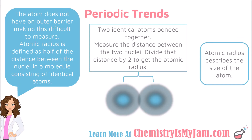The third trend is atomic radius — basically the size of the atom. One thing to note is that the atom does not have an outer barrier, so this is difficult to measure. Scientists measure it by taking two identical atoms bonded together, measuring the distance between the two nuclei, dividing that distance in half, and that gives the atomic radius.